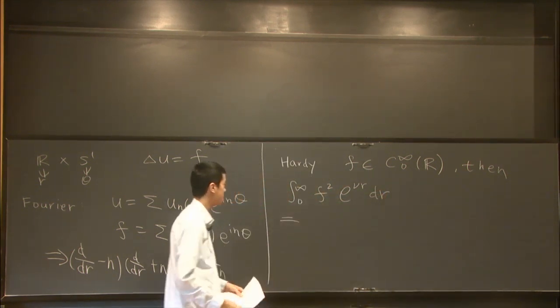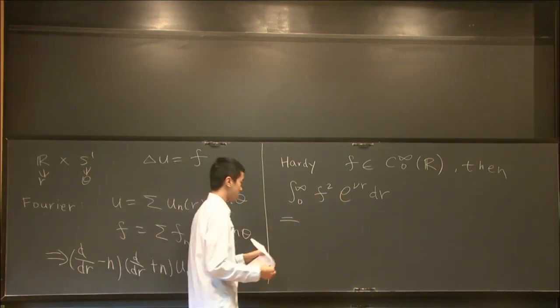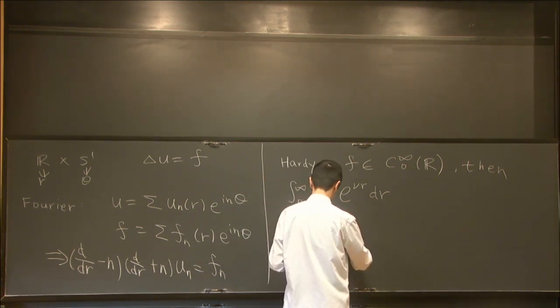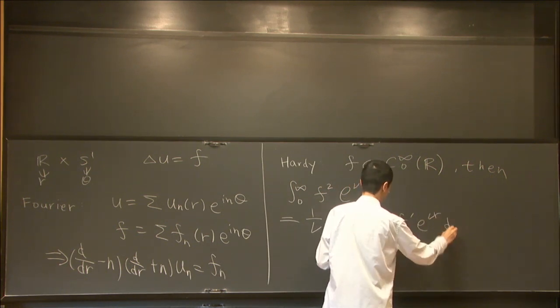Then the key idea of Hardy is to do the integration by parts. You get 1 over ν integral negative 2F F' e^{νr} dr.